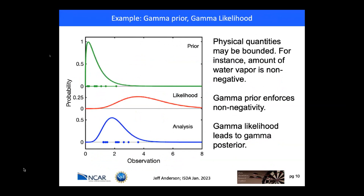Looking at an example of what that observation space might look like: suppose I have a bounded variable, maybe the amount of water vapor or some other tracer — so it's non-negative. The prior ensemble is shown in the top in green asterisks. I want some distribution that bounds that, so I'll pick a gamma continuous distribution and fit that gamma prior (the green curve) to the ensemble. I then get a likelihood — in this case a gamma is convenient too — from an instrument. The product of a gamma and a gamma is another gamma, giving the blue analysis distribution. The quantile conserving filter then determines the values of the posterior consistent with that analysis continuous distribution, and in this case I'm guaranteed not to violate the bound of zero, so I'll always have a positive amount of tracer.